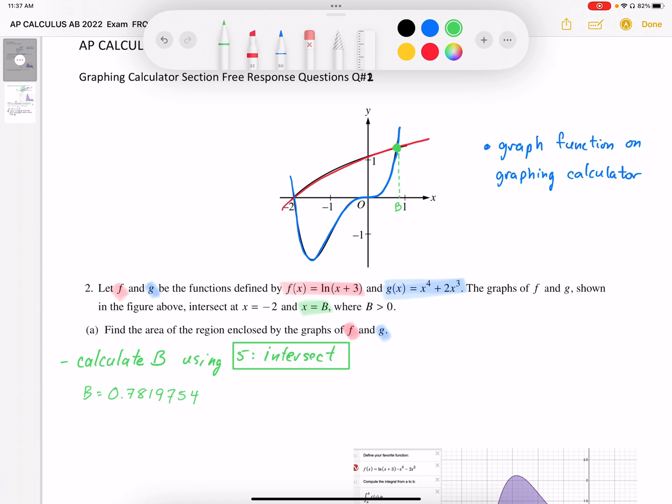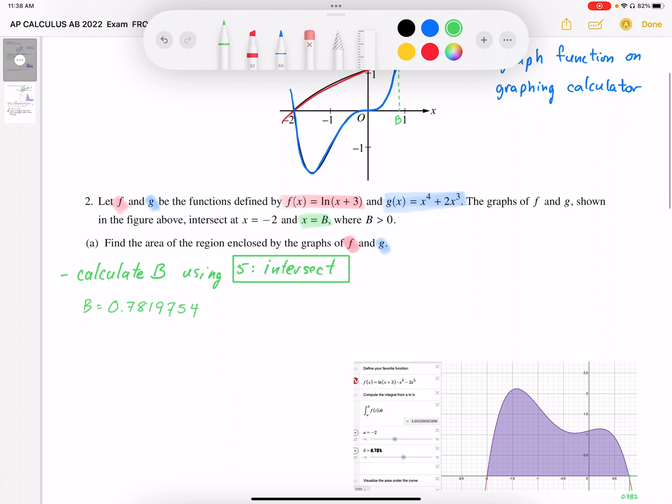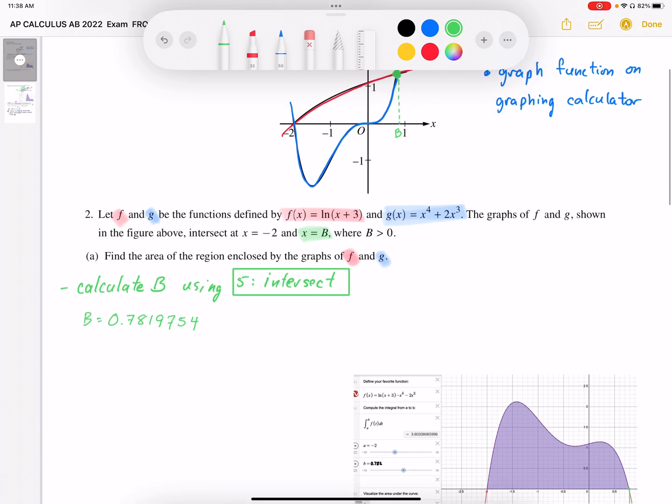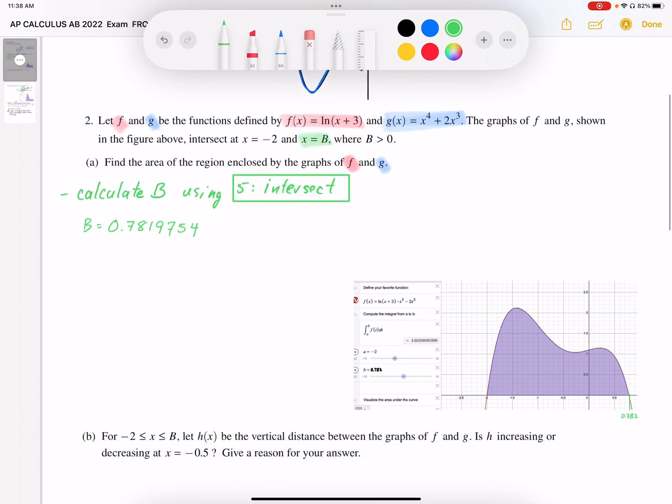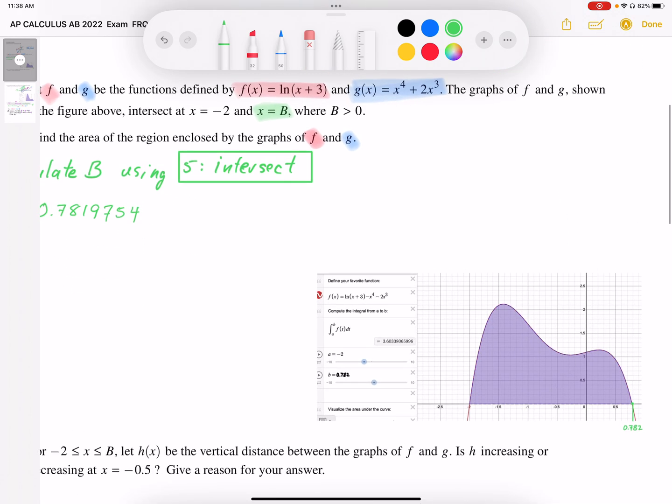Once we find the value of b, that allows us to have the bounds of our integration. So using that, we're going to calculate the area underneath those curves. We have a couple options here. We can find the area underneath the red curve and then subtract the area underneath the blue curve. What I've done over here is I've combined those two functions.